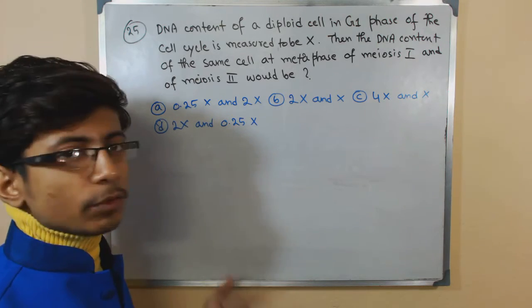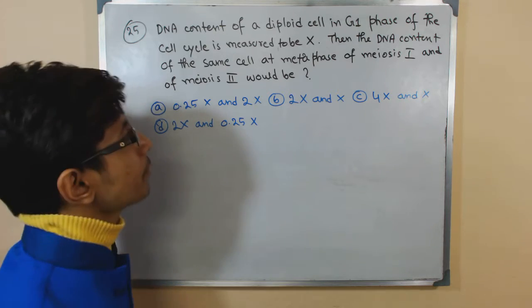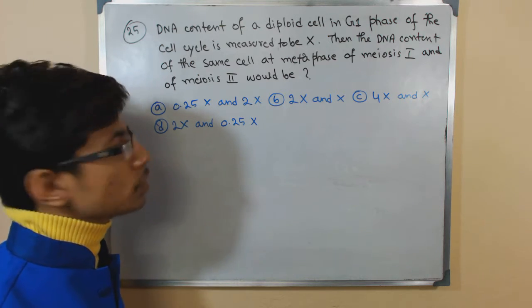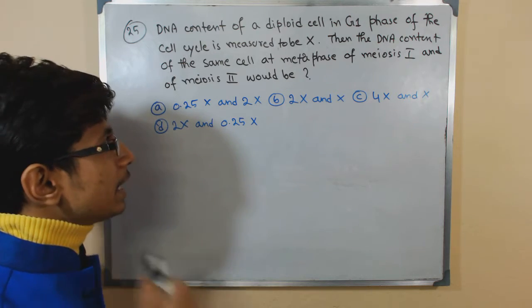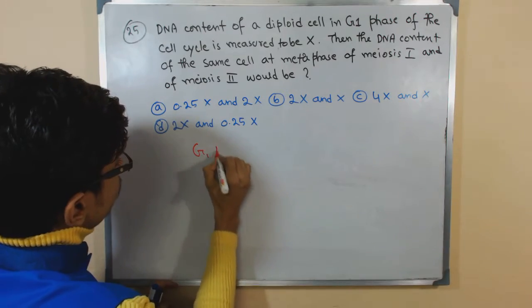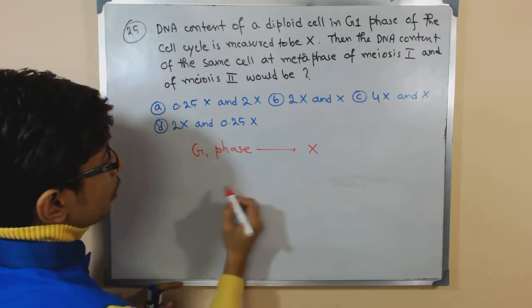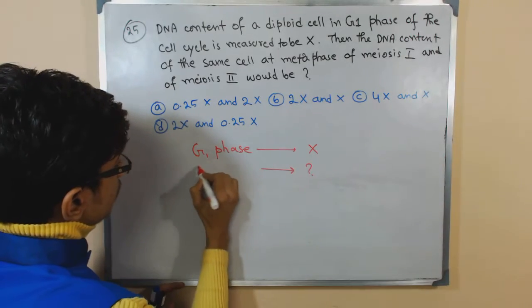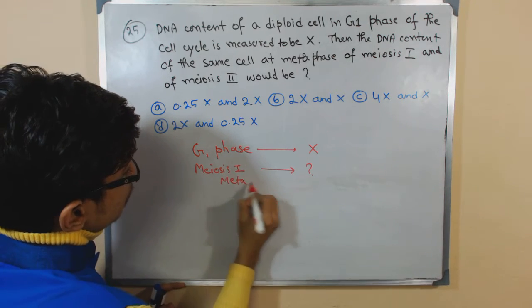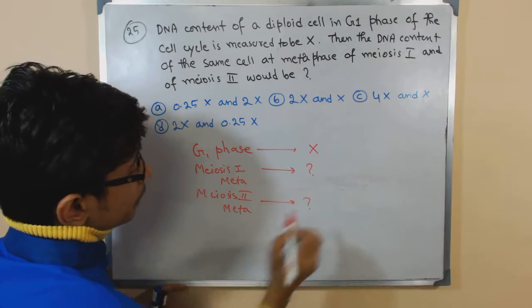The DNA content of a diploid cell in G1 phase of the cell cycle is measured to be X. Then the DNA content of the same cell at the metaphase of meiosis 1 and also the metaphase of meiosis 2 would be? That is the question.